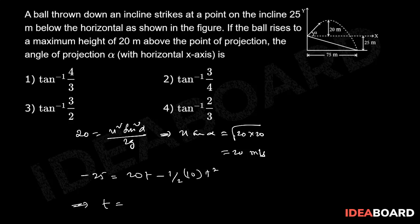We get t = 5 seconds, and 75 = u cos α × t. Therefore, u cos α = 75/5.